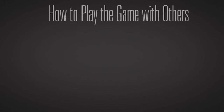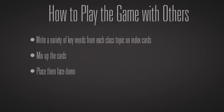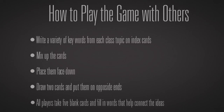I encourage you to play this game as a study tool with others. To do this, take the following steps: write out a variety of keywords from each class topic on index cards. Mix up the cards and place them face down like the memory game you played as a kid. Have someone draw two cards and place them on opposite ends. Give everybody five blank index cards, then fill in the words that help connect the ideas. Explain them to your friends. If there are new terms, add those to your deck of cards. Compare and contrast how you connect the first card with the last one — and you've created great chains of thinking.